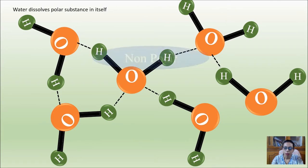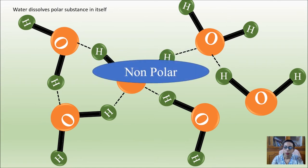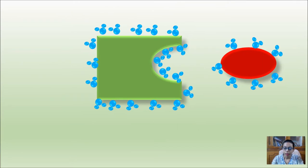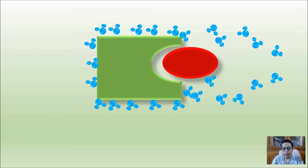Suppose we put a drop of oil in water. To minimize surface area, water molecules will surround the non-polar molecule, but this is not a very stable condition — there is a hydrophobic effect between oil and water. If we have two non-polar molecules together in the presence of water, the water will surround them to minimize its energy and surface area.